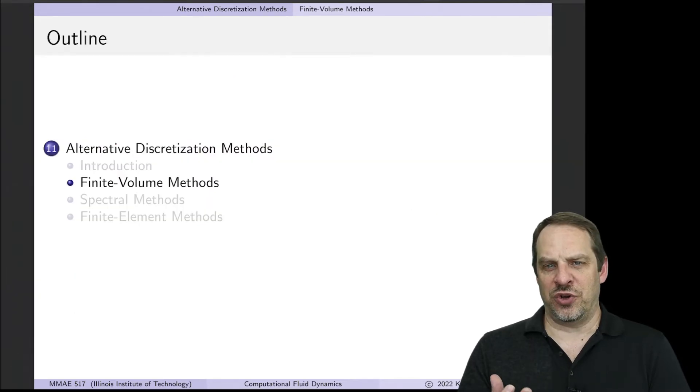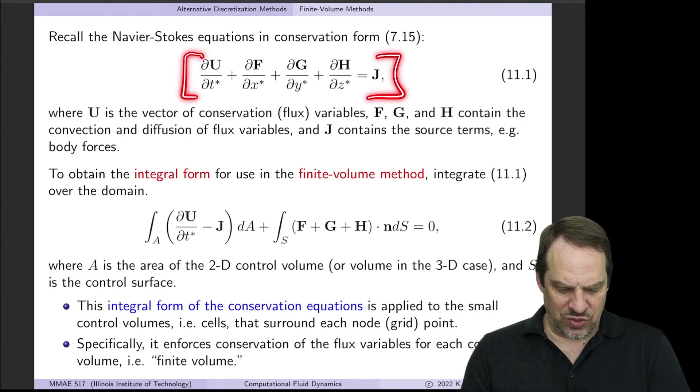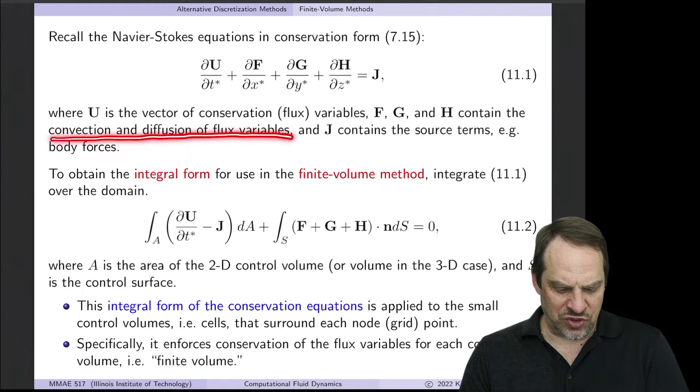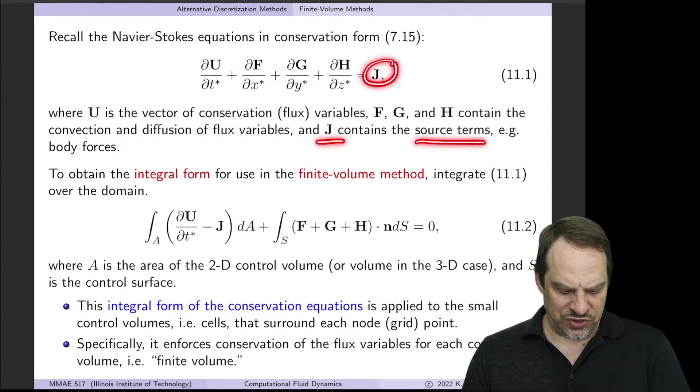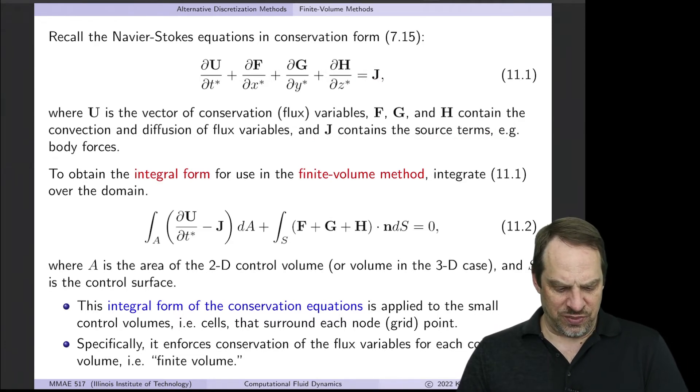Let me discuss finite volume methods just to give you a brief overview of this approach. Remember, we start with the conservation form, which we had in an earlier video. The U vector here has all the conservation or flux variables contained within it. The other vectors F, G, and H contain the convection and diffusion of those flux variables. And J contains all the source terms such as body forces that might be acting on a particular flow.